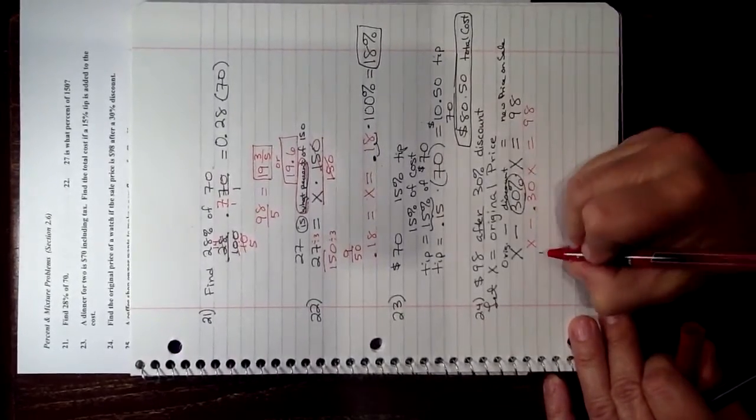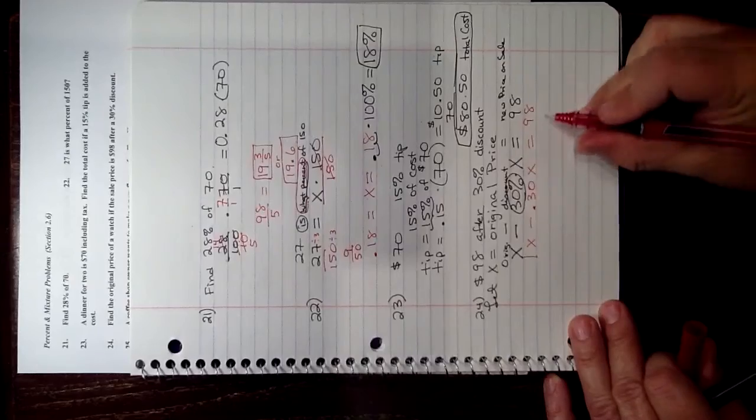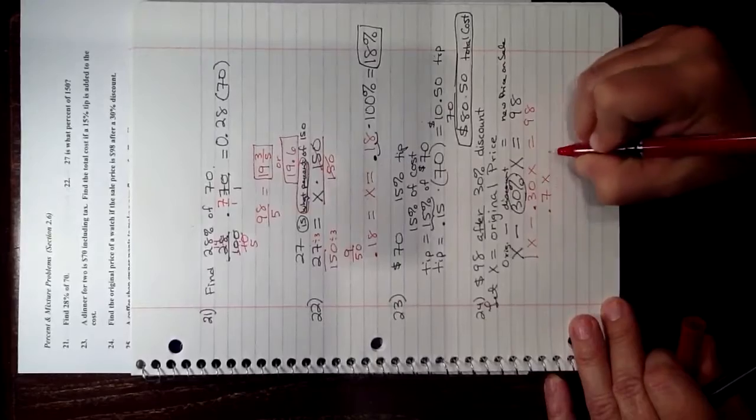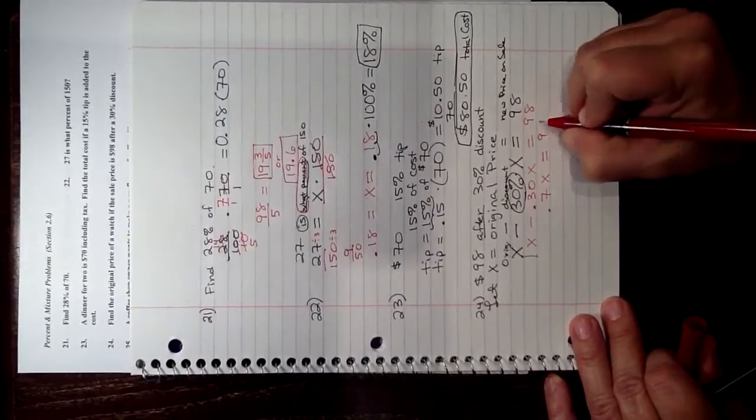I find that 1X minus 0.30X, you could use a calculator and you'll get that that's 0.7, or 0.70X equals 98.